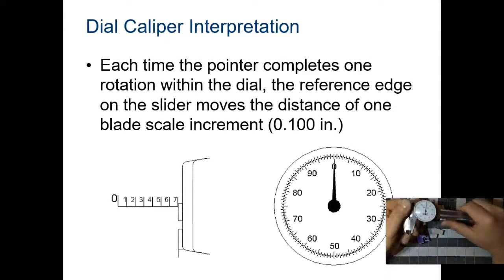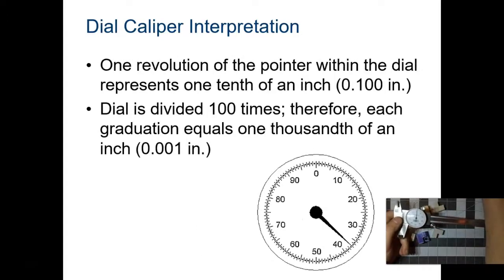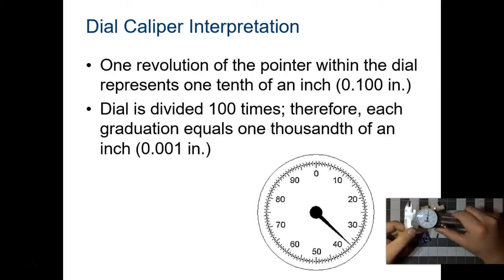Each time the pointer completes one rotation within the dial, the reference edge on the slider moves the distance of one blade scale increment, or 0.100 inches. One revolution of the pointer within the dial represents one tenth of an inch. The dial is divided 100 times. Therefore, each graduation equals one thousandth of an inch.